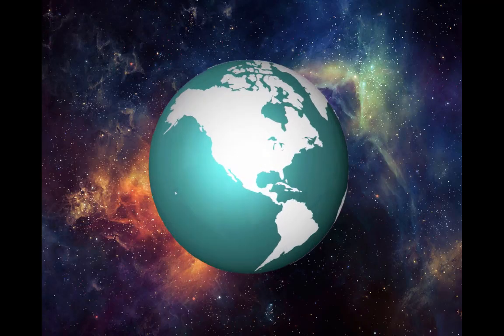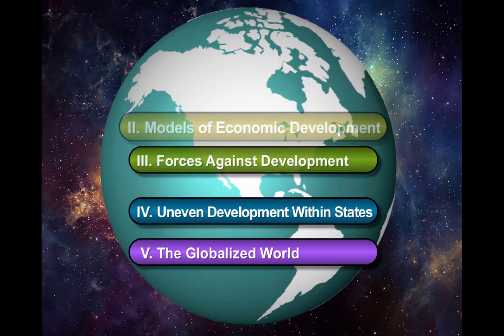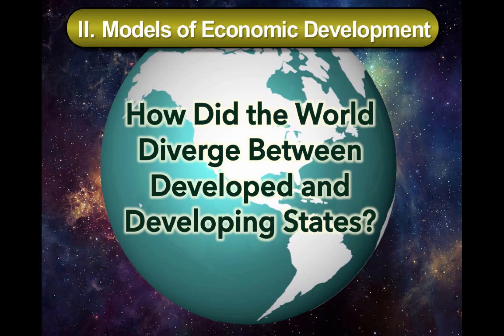Welcome to Economic Development and Globalization, Part 2. In this video, we're going to be looking at certain models of economic development and ask this essential question: how did the world diverge between developed and developing states? How is it that some countries and regions are so developed, so healthy, wealthy, and wise, whereas others are not? Some individuals have pondered the same thing and devised models to predict and explain this divergence.